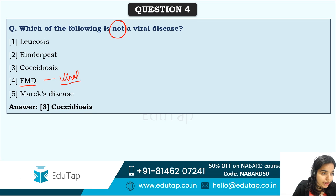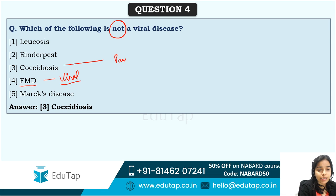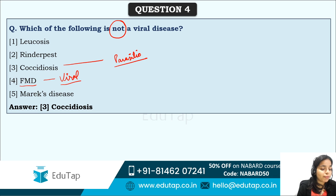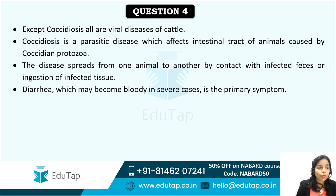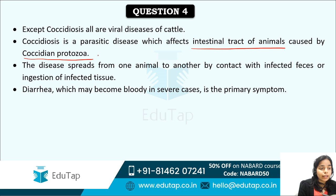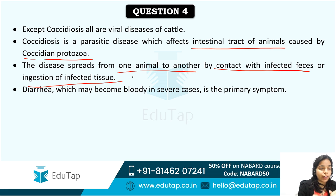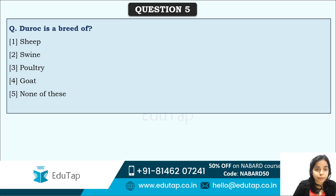The correct answer is Coccidiosis, which is not a viral disease — it is a parasitic disease caused by Coccidia protozoa. Leukosis, Rinderpest, Foot and Mouth Disease, and Marek's disease are all viral diseases in animals. Coccidiosis affects the intestinal tract of animals and spreads by contact with infected feces or ingestion of infected tissue.